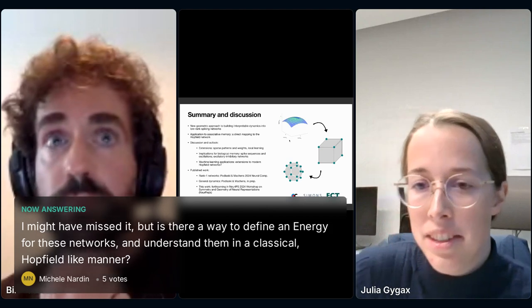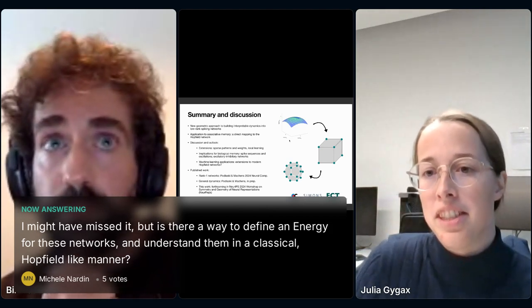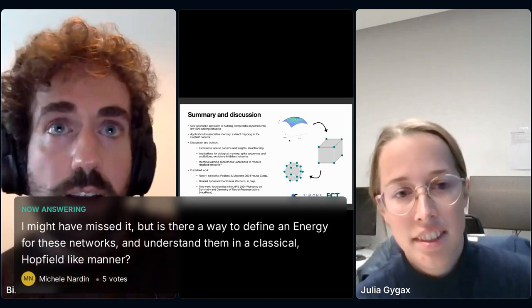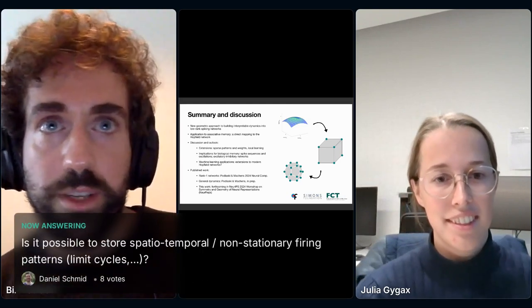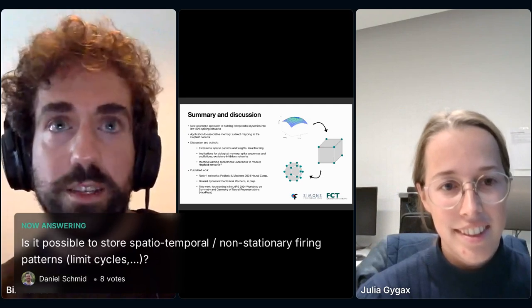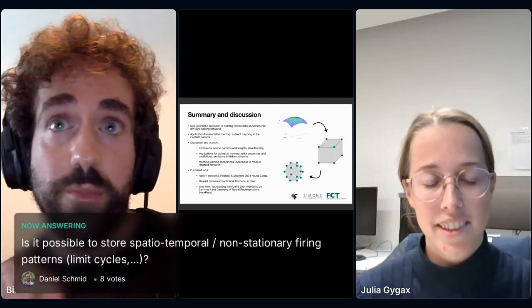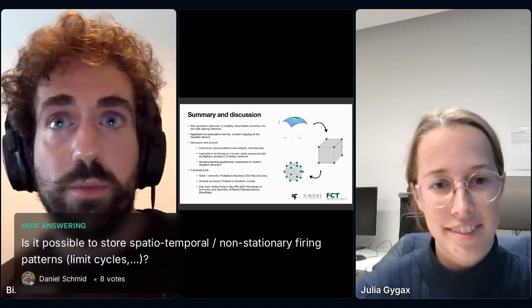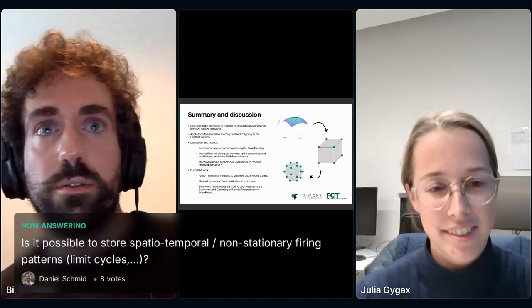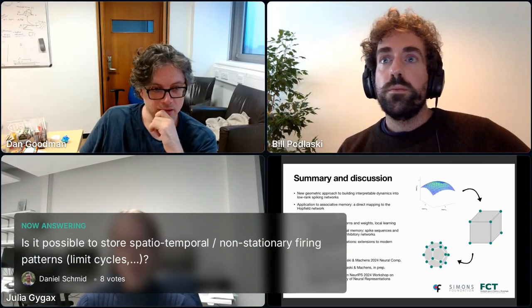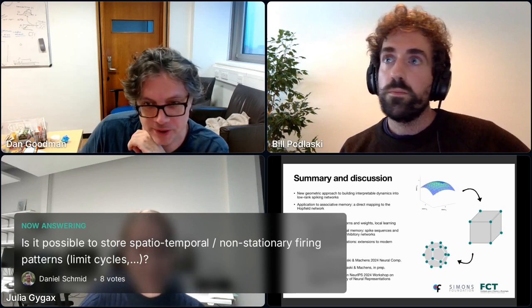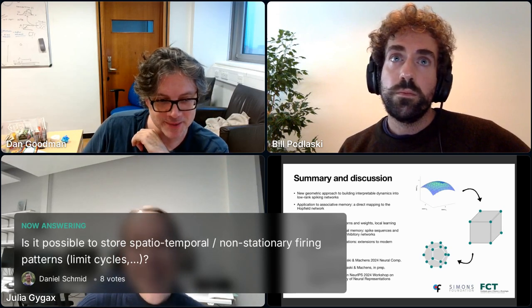Then I think we go for one last question by Daniel Schmid. Is it possible to store spacious temporal and non-stationary firing patterns like limit cycles? Thanks. Also a very nice question. For sure it is. Actually, in the previous talk from Christian, you showed how you can store a limit cycle in the network. For sure, if we design the dynamics appropriately, we can have the dynamics jump between the vertices instead of staying at one vertex. So I think it's a pretty general framework to store different types of dynamics. Thank you very much. I think we stop here with the questions. Actually, we can run on a little bit more because the next session is a bit complicated to set up. So then we likely have time for the rest of the questions.